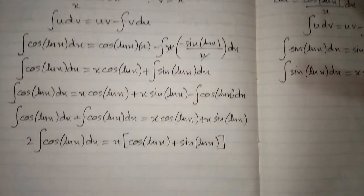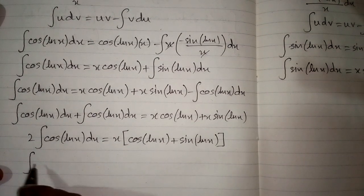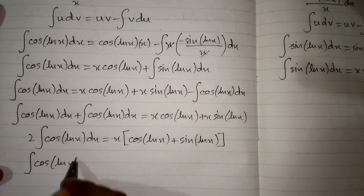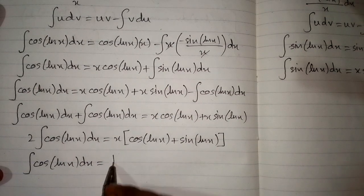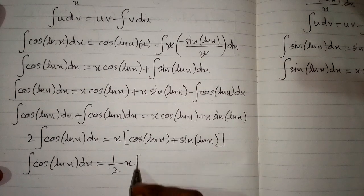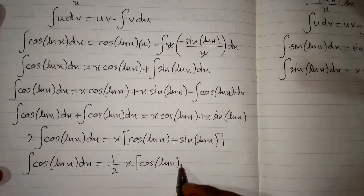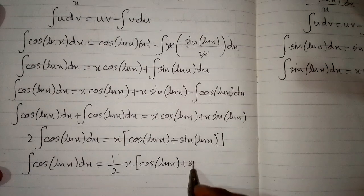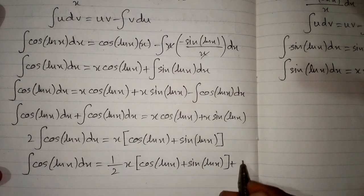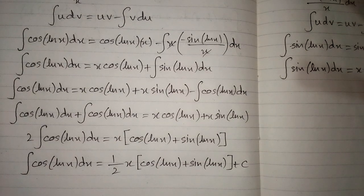Dividing both sides by two, the integral of cosine of ln of x dx equals one half times x times the quantity cosine of ln of x plus sine of ln of x, plus C, where C is the constant of integration.